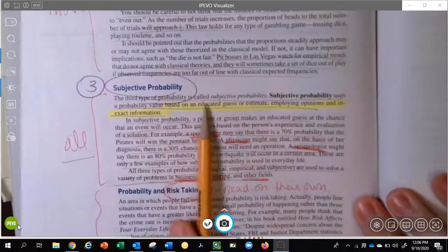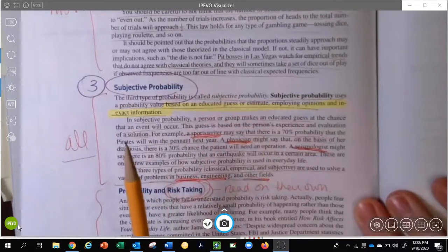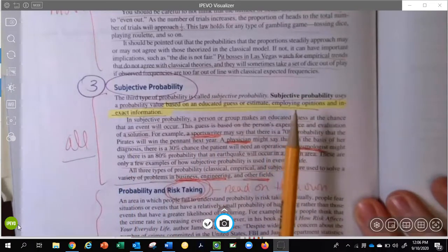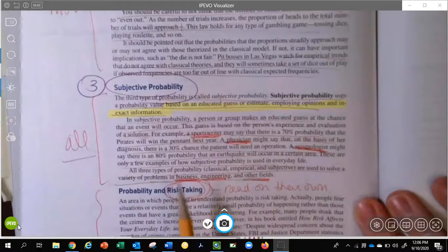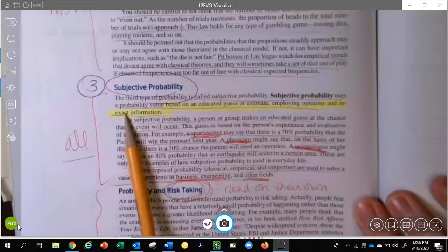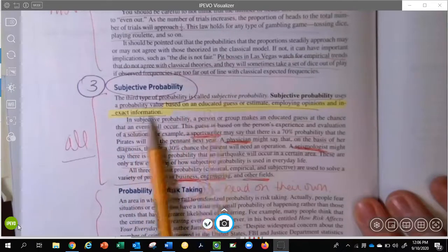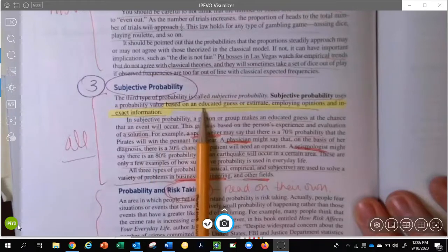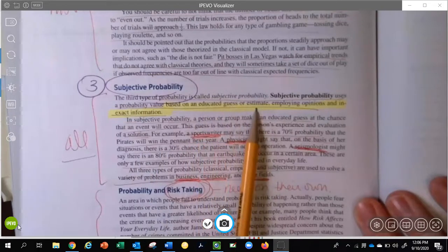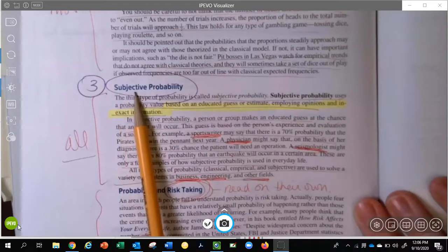The third type of probability is called subjective. Make sure you're taking notes, adding a note card, an index card. This would be great to write subjective probability on one side of your index card, flip it over, and jot some of these ideas as a study tool. Subjective probability uses a probability value based on, and I would put this highlighted part or something like this in your own words on that index card, an educated guess or an estimate.